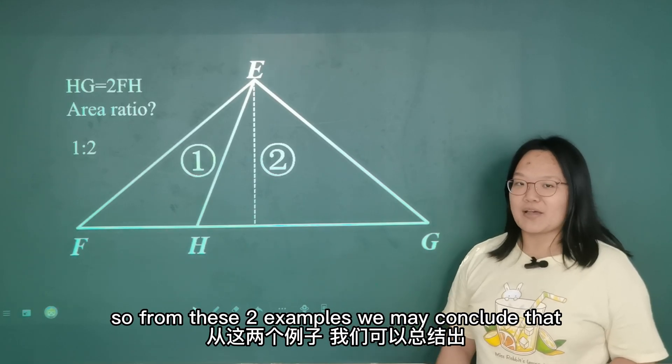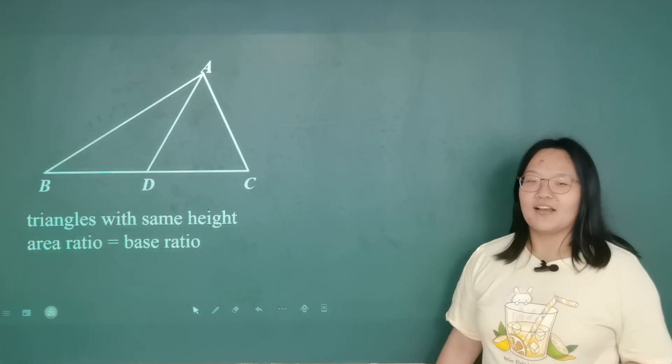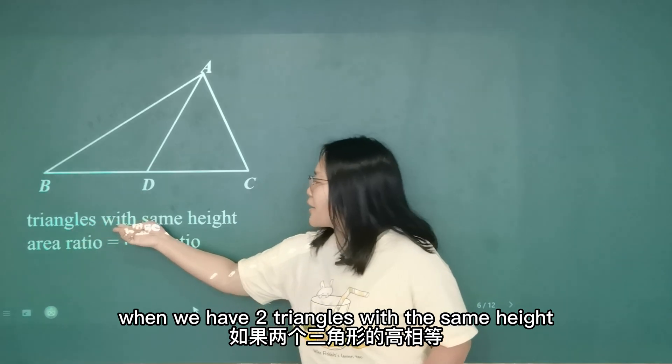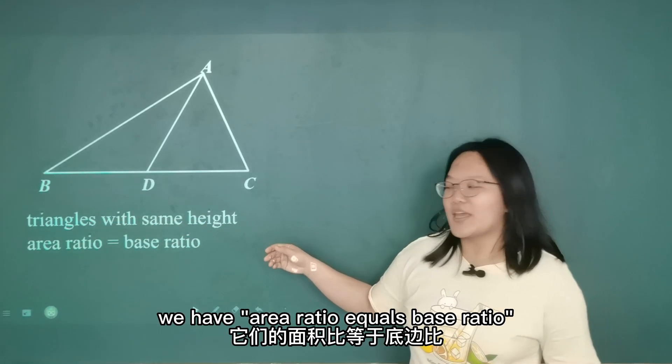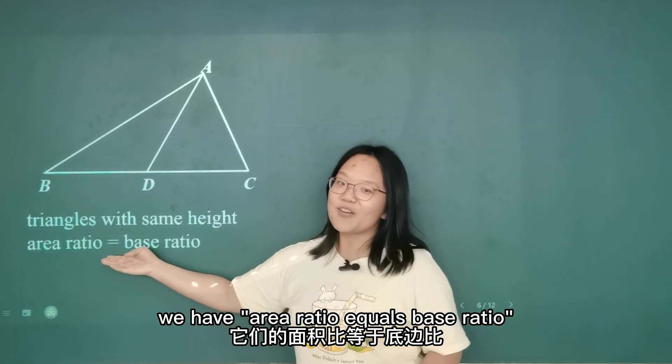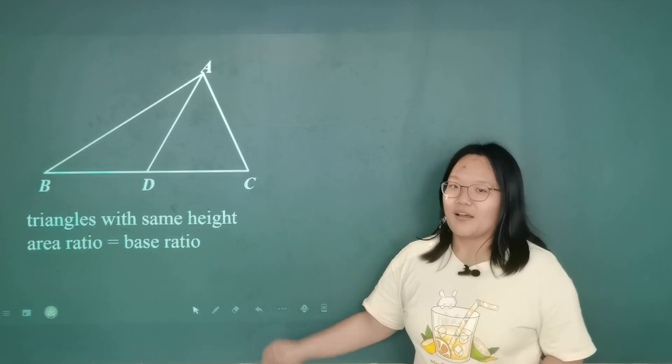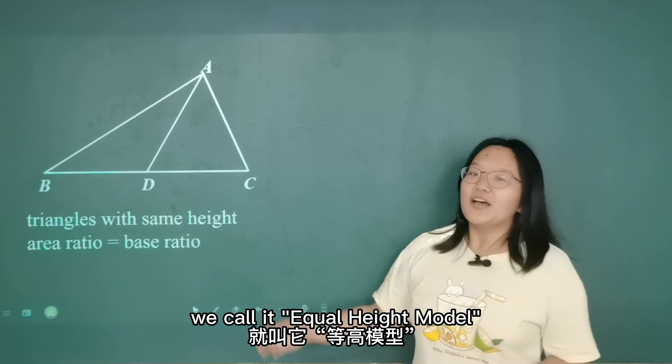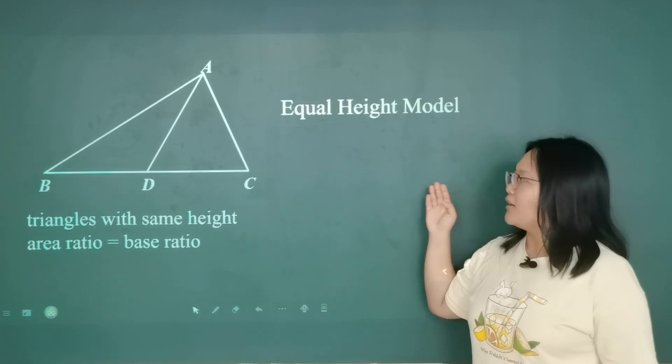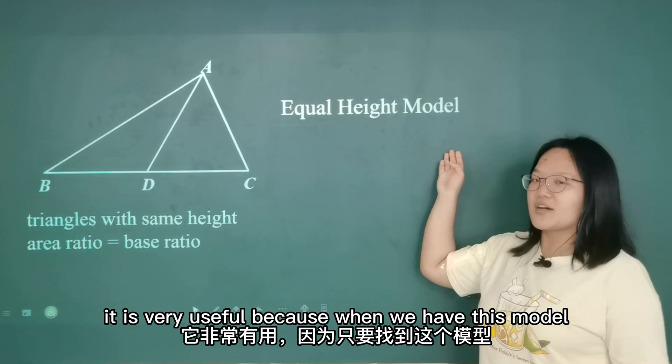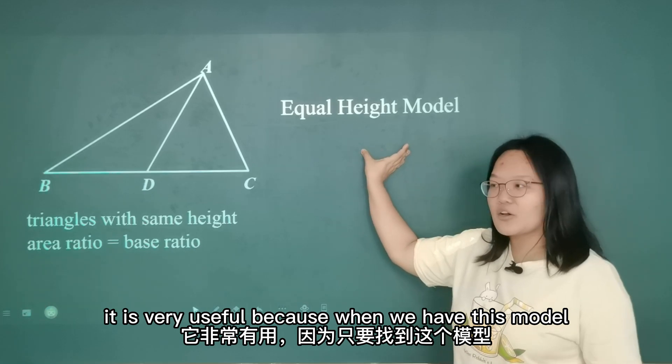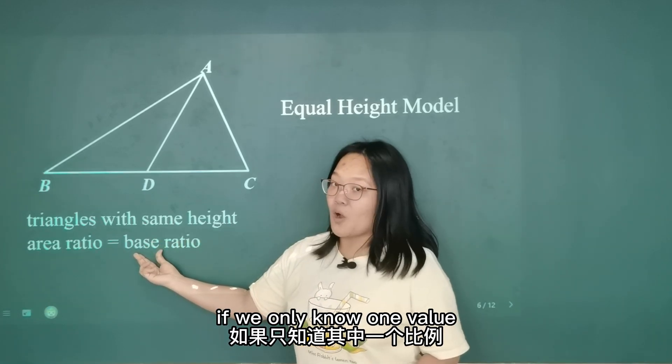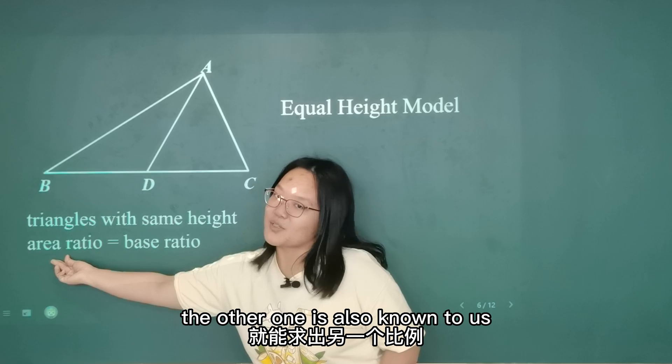So from these two examples, we may conclude that when we have two triangles with the same height, we have area ratio equals base ratio. And such a shape, we give you the name. We call it equal height model. It is very useful because when we have this model, if we only know one value, the other one is also known to us.